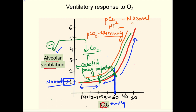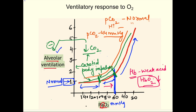A second reason for the mismatch: deoxyhemoglobin is a weaker acid than oxyhemoglobin. When pO2 decreases, more deoxyhemoglobin forms, slightly raising the pH toward alkalosis. Since pH also affects ventilation, this mild alkalosis causes a slight decrease in alveolar ventilation, further counteracting the increase driven by carotid body impulses.